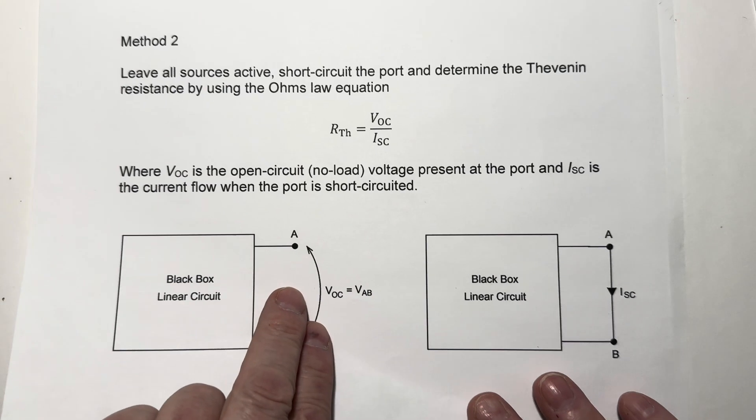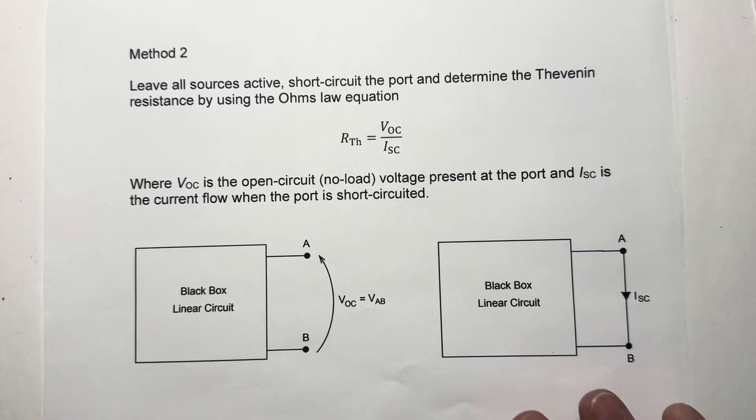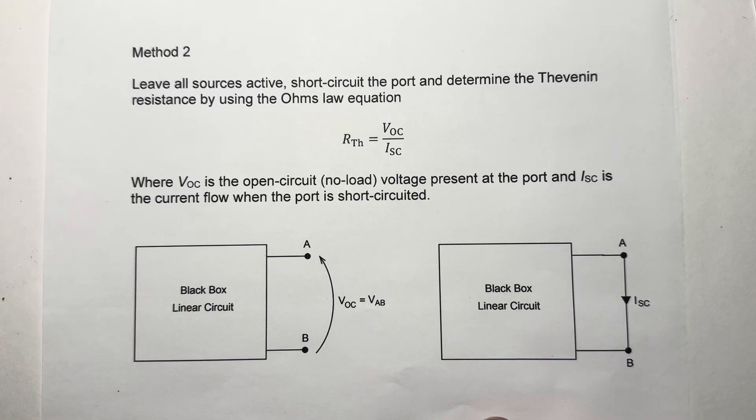Method number two, we can leave all of the sources active in the network and connect a short circuit across our port and determine the resulting short circuit current. The Thevenin resistance is the open circuit voltage divided by the short circuit current.